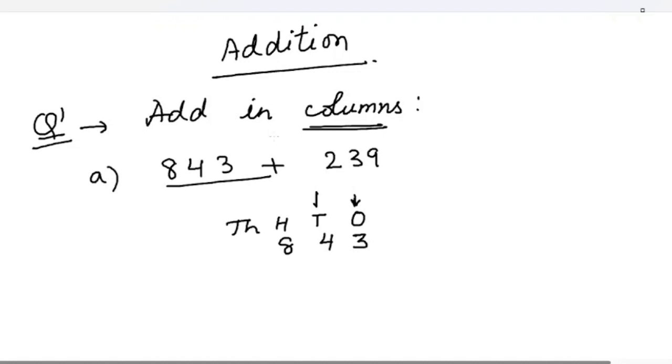This one, ones column. This is tens column, hundreds column and the thousandth column. Now, second number is 239. We will write 239 and add them.